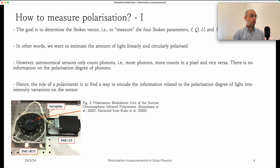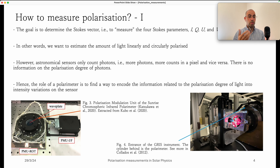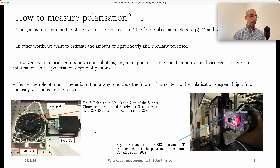The role of a polarimeter is essentially to encode or transform the polarization information contained in the light into information that the sensor can be sensitive to. Here are two examples: the Sunrise Chromospheric Infrared Spectral Polarimeter, which is a relatively new instrument, and the GRIS instrument, also relatively new. In both cases there are several elements for the polarimeter — here is the wave plate, the electronics, and the polarimeter cylinder located behind the entrance slit of the instrument.